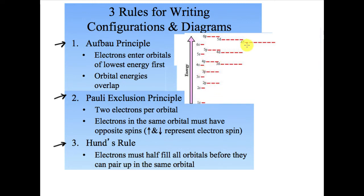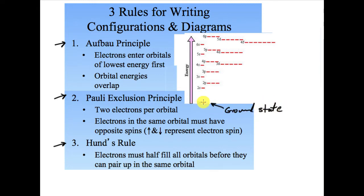The lowest energy is where the electron goes — that's the ground state. All these electrons are going to be put in their ground state. We fill the lowest energy first, then go to the next energy, then the next one. These lines here represent the orbitals, so each line will get two electrons. Once we put two electrons in, we move to the next one, then the next one. This is the orbital energy level overlap.